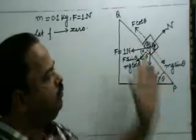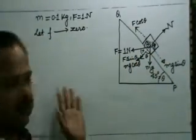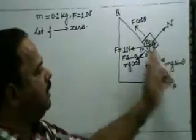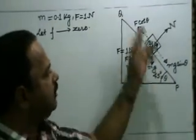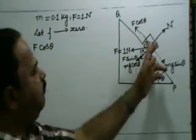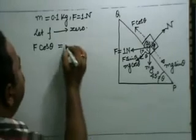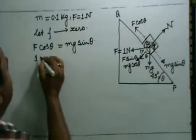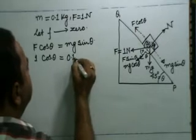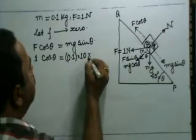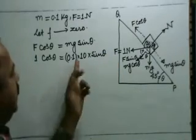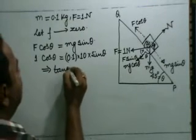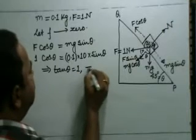When friction is zero and the block is in equilibrium, the net force down the plane must be zero. Down the plane we have mg sin theta, and up the plane we have F cos theta. Setting them equal: F cos theta = mg sin theta, so 1 × cos theta = 0.1 × 10 × sin theta, giving cos theta = sin theta, so tan theta = 1, which implies theta = 45 degrees.